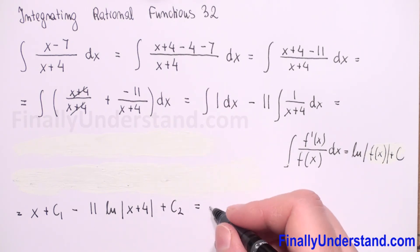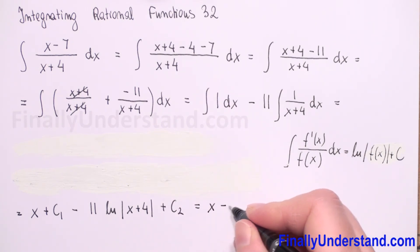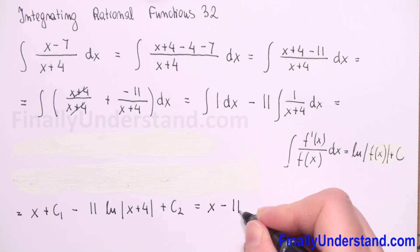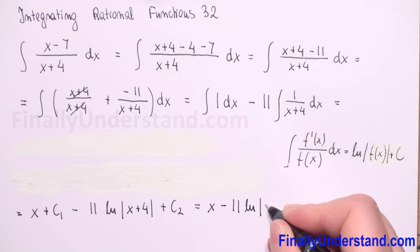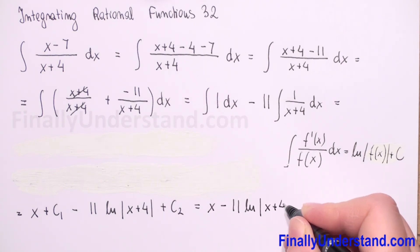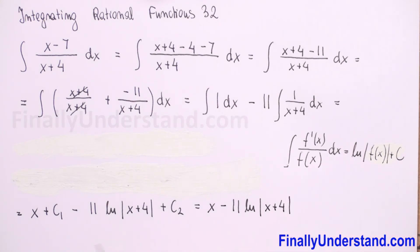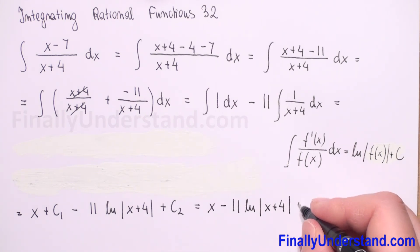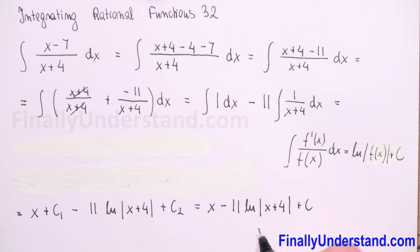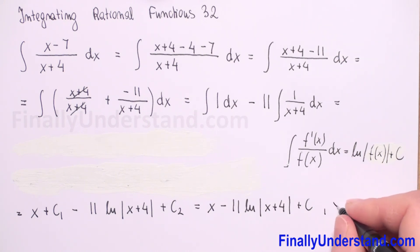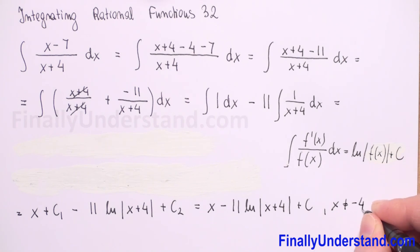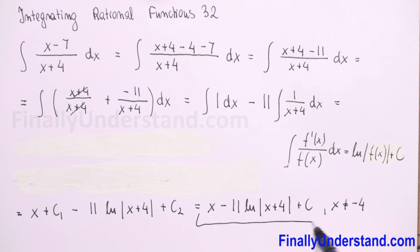So the final result is x minus 11 times the natural logarithm of the absolute value of x plus 4, plus constant C, where c1 and c2 are combined into C. Because we have a natural logarithm, we cannot calculate the natural logarithm of 0, so x must be different than negative 4. This is the solution.